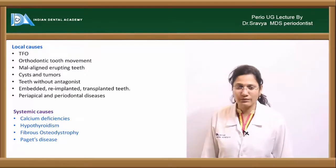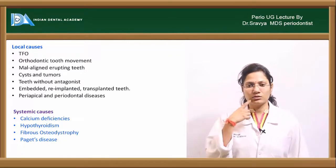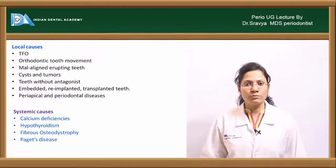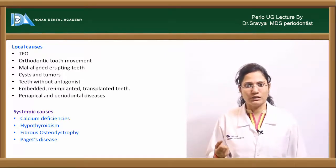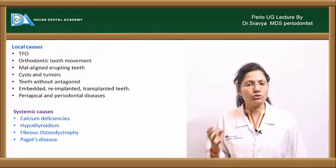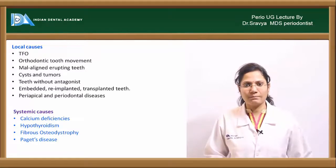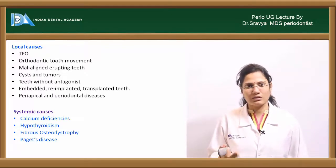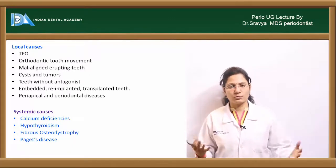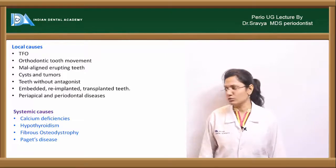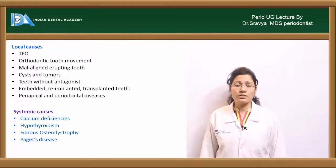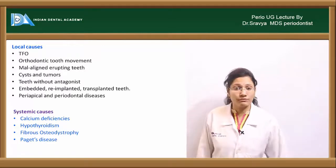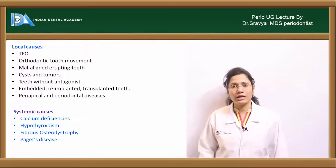In auto-transplantation, healing may involve cemental resorption leading to replacement resorption or ankylosis. Periodontal and periapical diseases also cause resorption. Systemic causes include calcium deficiencies, hypothyroidism, fibrous osseous dystrophy, and Paget's disease.